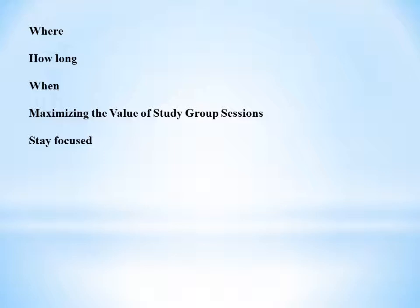Study in environments without distractions where group members can communicate freely. Most libraries contain group study rooms, and studying in the open can also work. It's best to study two to three hours at a time — long sessions lead to more socializing and less productivity, while sessions under an hour tend to be rushed and unproductive. If you plan to meet regularly, organize sessions at the same location and time, so individual members can properly prepare prior to meeting. Having study groups at the same time each week allows students to fit it into a permanent schedule.